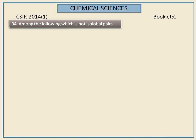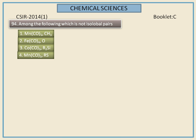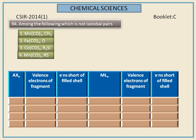Among the following, which is not an isolobal pair? The options are shown here. To select the correct one, we should know what isolobal means. Two fragments or molecules are said to be isolobal if their frontier orbitals are same in number, possess the same symmetries, same occupation by electrons, and similar radial extent. It is represented by a double-headed arrow with a teardrop in the middle. In a crude way, we can identify isolobal pairs by valence electrons and electrons short of filled shells.